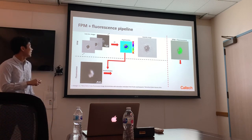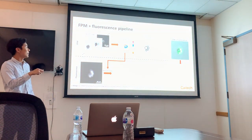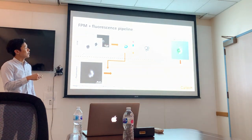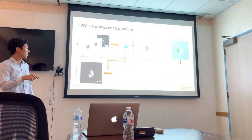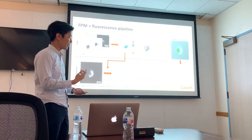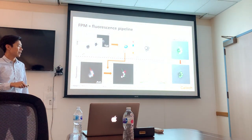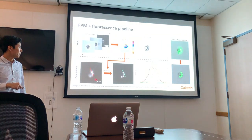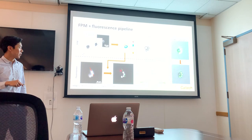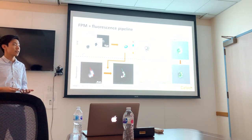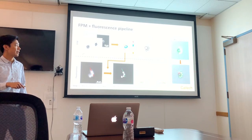Using this pipeline on microbead samples — some fluorescent, some non-fluorescent — you run FPM to recover the pupil function and intensity image, then apply the approximate Wiener deconvolution to recover the aberration-free image of the microbeads. From the line plot, you can resolve the beads much more clearly after deconvolution. Overlaying the fluorescence image with the bright-field image, you gain more information: for instance, a large bead that must have no fluorescence, while the small beads are fluorescent.